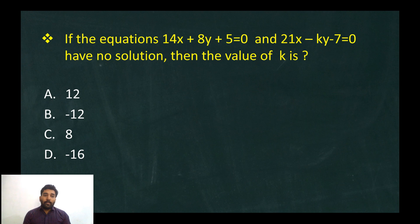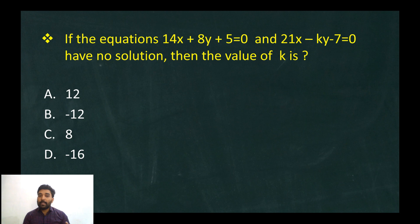If the equations 14x plus 8y plus 5 equals 0, and 21x minus ky minus 7 equals 0 have no solution, find the value of k.